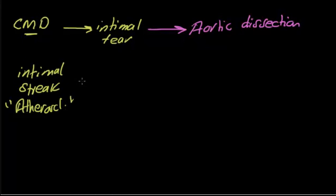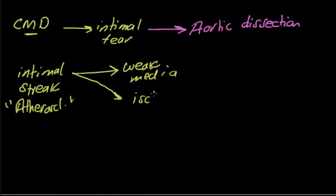Atherosclerosis leads to many complications. First, weak wall, meaning weak media. Second, ischemia to the tissue because of the intimal citric that obstructs the blood vessels. The vessel can become totally obstructed.